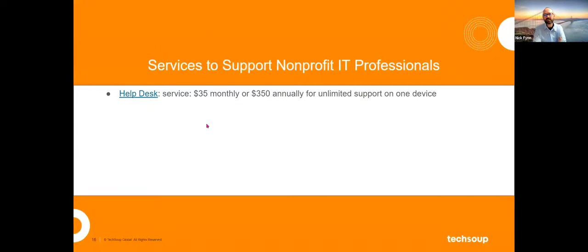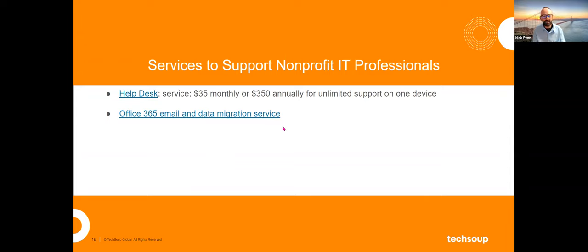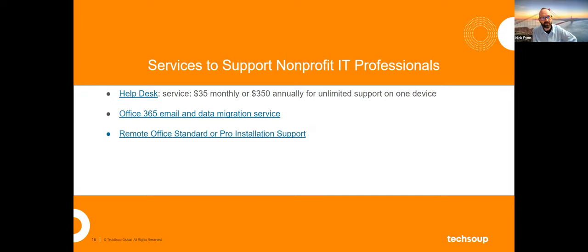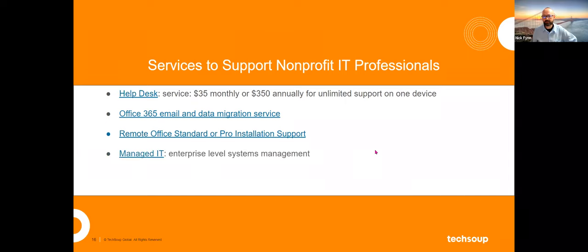The help desk service is $35 per month or $350 annually for unlimited support on one specific device — a good option for very small nonprofits with one primary computer. The Office 365 email and data migration service helps implement Office 365 and get your email working properly. Remote office installation support is available for on-premises versions. Managed IT is the enterprise-level systems management option for larger nonprofits wanting help managing their whole technology stack. The digital assessment tool helps you understand your nonprofit's level of digital maturity.